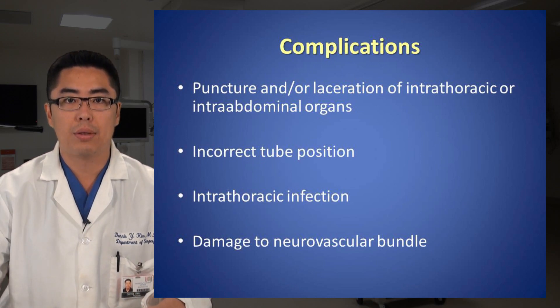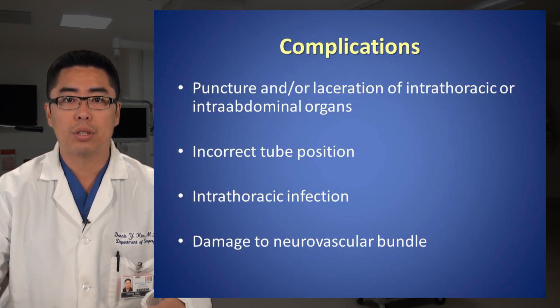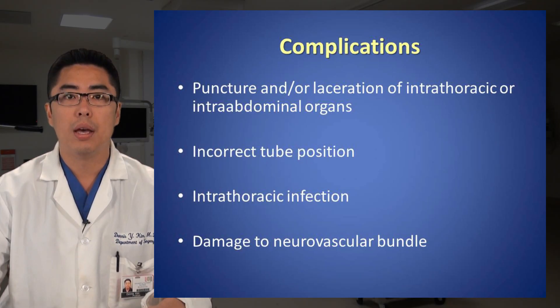Complications: A variety of complications may be associated with chest tube insertion. These include but are not limited to puncture and/or laceration of intrathoracic or intra-abdominal organs, incorrect tube position, intrathoracic infection, and injury to the neurovascular bundle. There is some evidence suggesting that the administration of prophylactic antibiotics may decrease the incidence of intrathoracic infection.